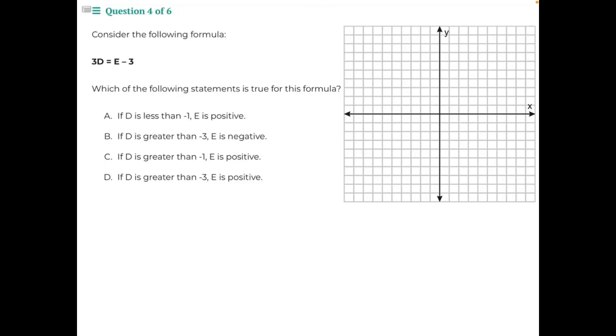Consider the following formula: 3d equals e minus 3. Which of the following statements is true for this formula? A: If d is less than negative 1, e is positive. B: If d is greater than negative 3, e is negative. C: If d is greater than negative 1, e is positive. And D: If d is greater than negative 3, e is positive.